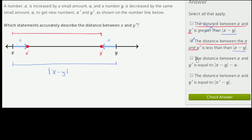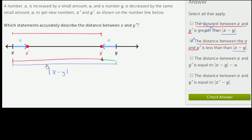The distance between x and y prime is equal to the absolute value of x minus y, minus a. That looks right. You take the absolute value of x minus y, and from that you subtract a, then subtract a again. What are you left with? You're going to be left with the distance between x and y prime. So this looks correct.